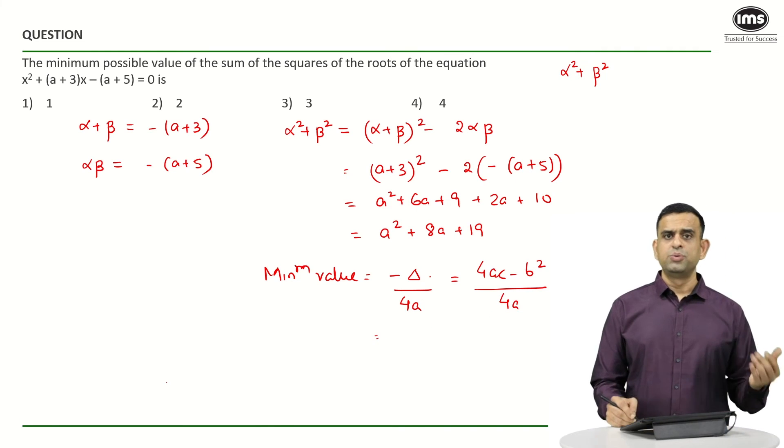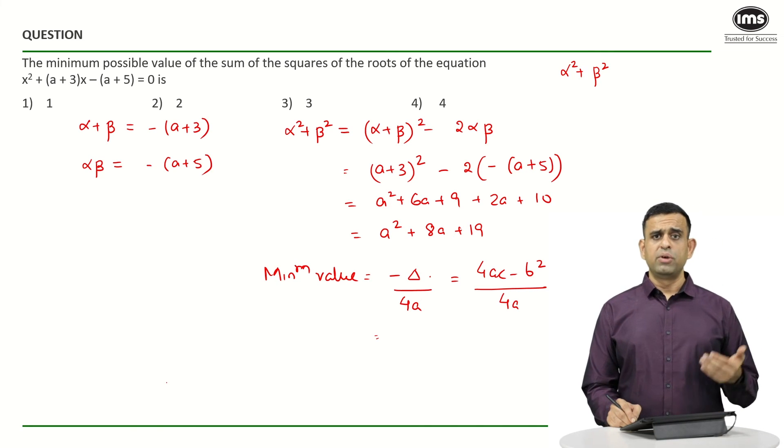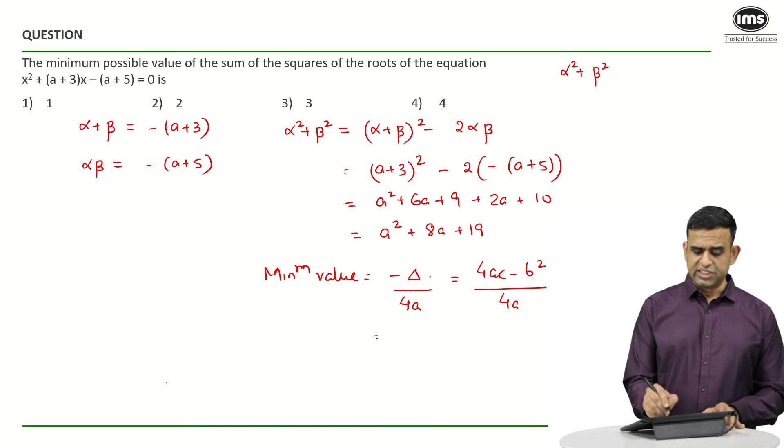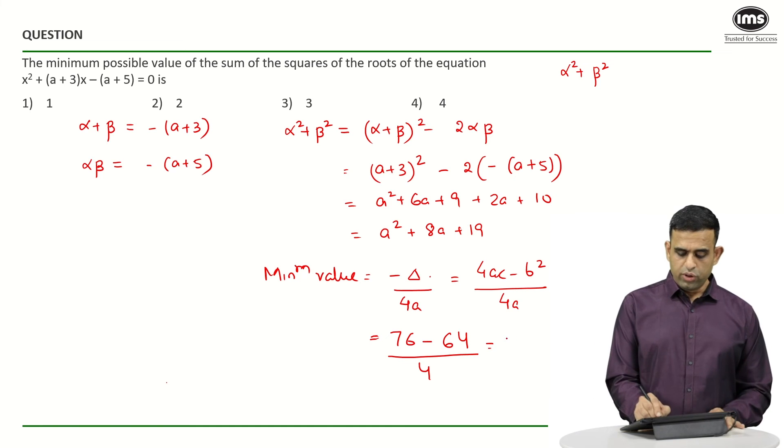Here my a is 1, b is 8, and c is 19. So 4ac will become nothing but 4·1·19 = 76, minus the b² term becomes 64, divided by 4. You get 12 divided by 4 as 3. That is the least value.